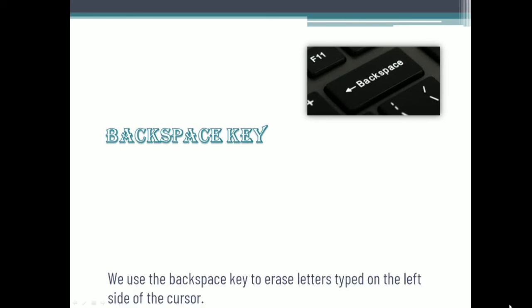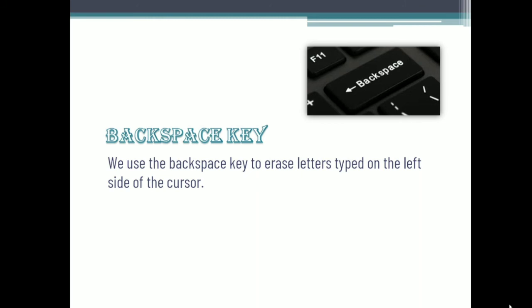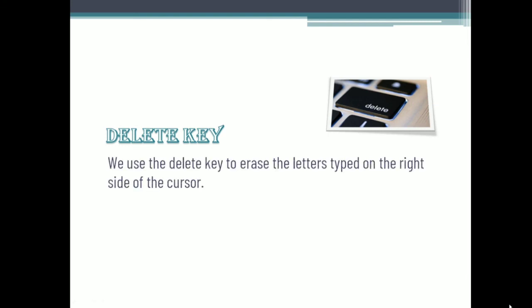The next type of key is called the backspace key. We use the backspace key to erase letters typed on the left side of the cursor. Whenever we type something on the keyboard, the cursor on the monitor moves to the right side. So whatever we have typed to the left side of the cursor, we can erase using the backspace key. There is one more key for deleting letters called the delete key. The delete key is used to erase letters typed on the right side of the cursor — whatever is on the right side of the cursor can be deleted using the delete key.